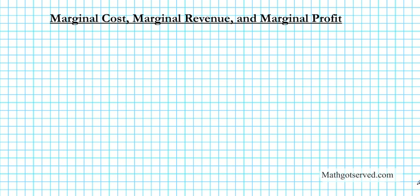Hey students, in this clip we are going to go over an example — a three-part example on how to calculate marginal costs, marginal revenue, and marginal profit, considering the revenue and cost of production for Micron Inc.